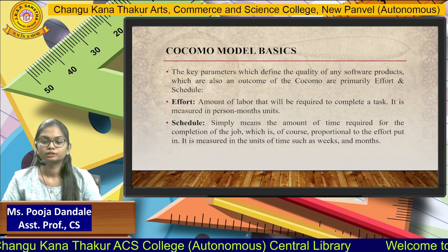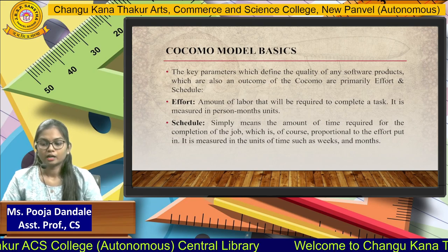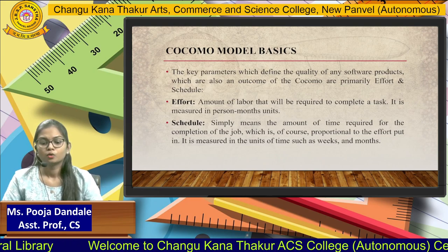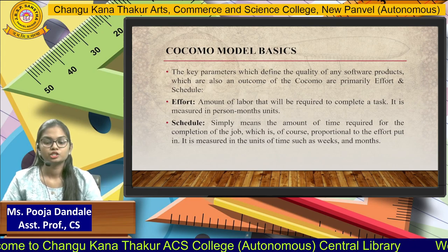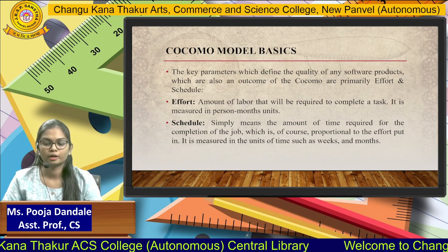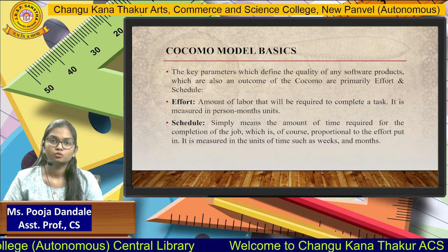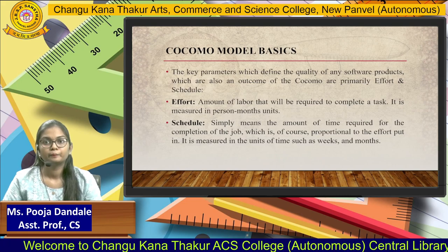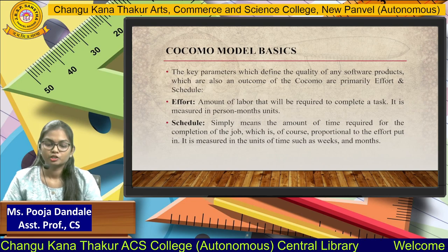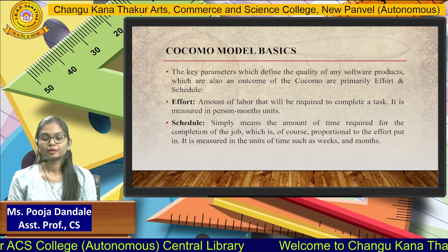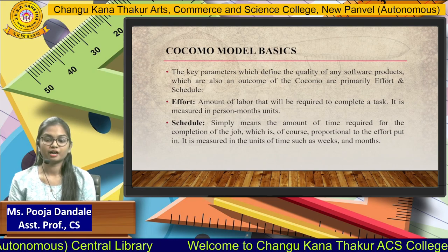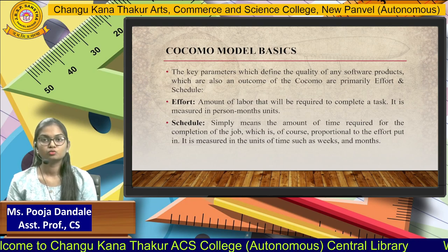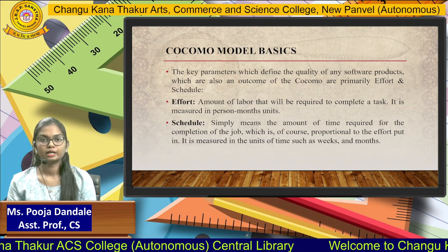Moving on to COCOMO model basics: the key parameters which define the quality of any software product are primarily effort and schedule. When we talk about quality, we look at how much effort someone has put in and what the schedule was — how much time and money was used. Effort is the amount of labor required to complete a task, measured in person-month units. Effort and schedule are the two main key parameters in the COCOMO model.